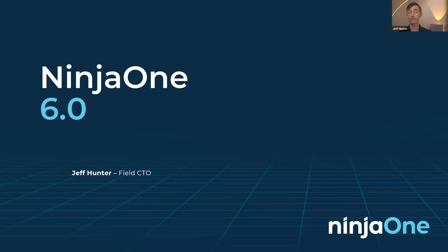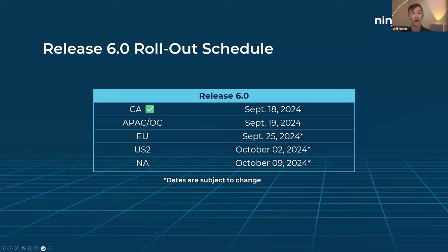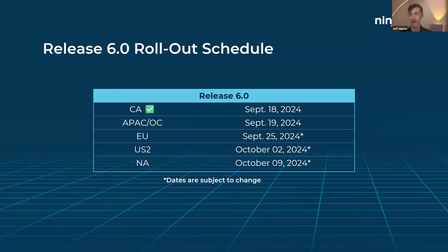With that, we can continue on to the main event, which is the 6.0 release of NinjaOne. If you're in the Canadian instance, this was released last night. If you are in APAC or the OC instance, you are in the process of receiving the 6.0 release right now. For anyone in the EU, that's projected for next week. Then we'll see it roll out to US instances, landing in our main US instance on October 9th. These dates are subject to change — the last thing we want to do is stick to a release date when we know that release has an issue.